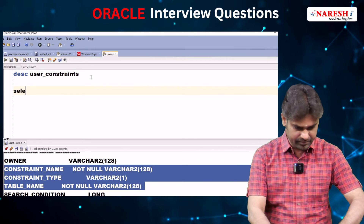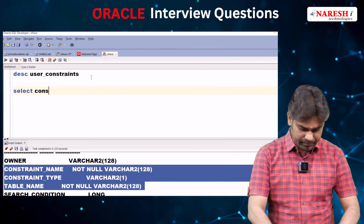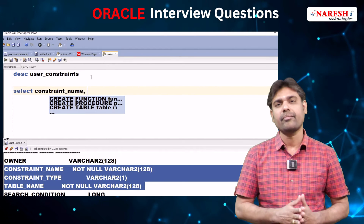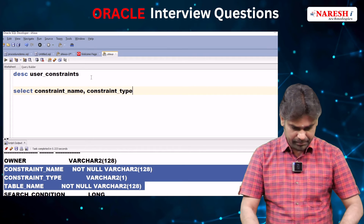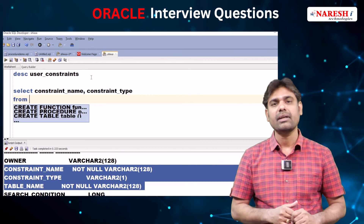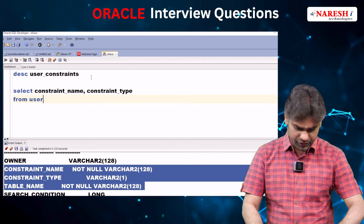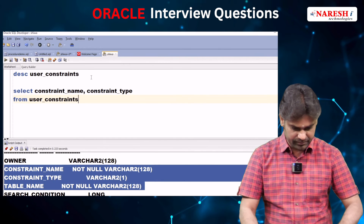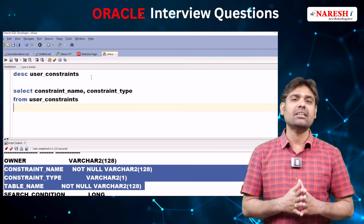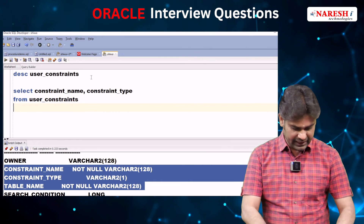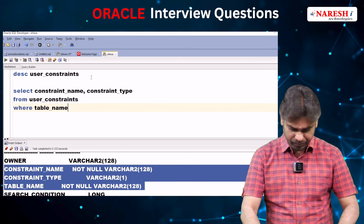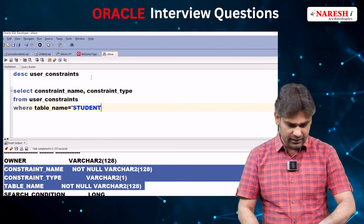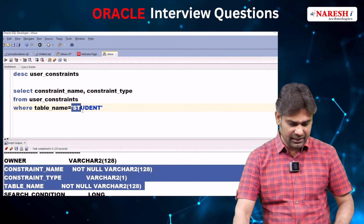Observe. I am writing: SELECT constraint_name, constraint_type FROM user_constraints. Which table's constraints information do we want to see? The student table. So write: WHERE table_name equals 'STUDENT'. In Oracle SQL, string comparison is case-sensitive, so we must write the table name in capital letters.